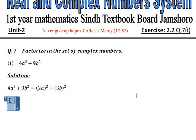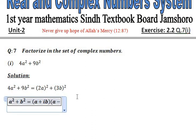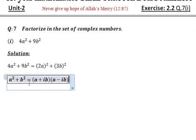So we know very well that a² - b² equals (a + b)(a - b). But here is a² + b². So a² + b² equals (a + ib)(a - ib). Similarly here, suppose that a equals 2a and b equals 3b in our formula.